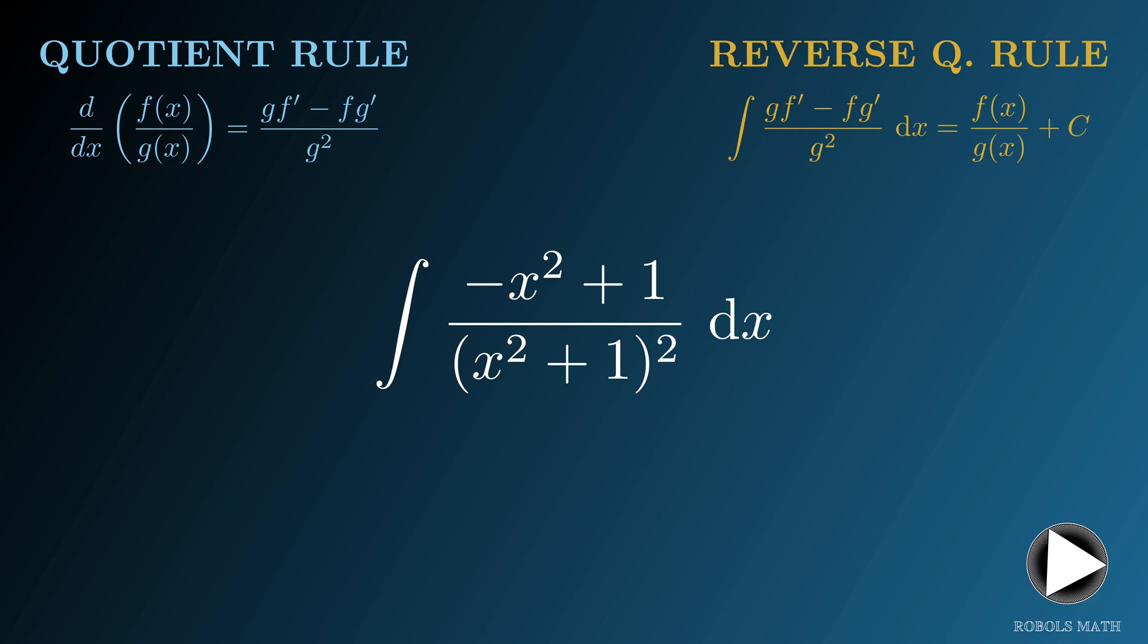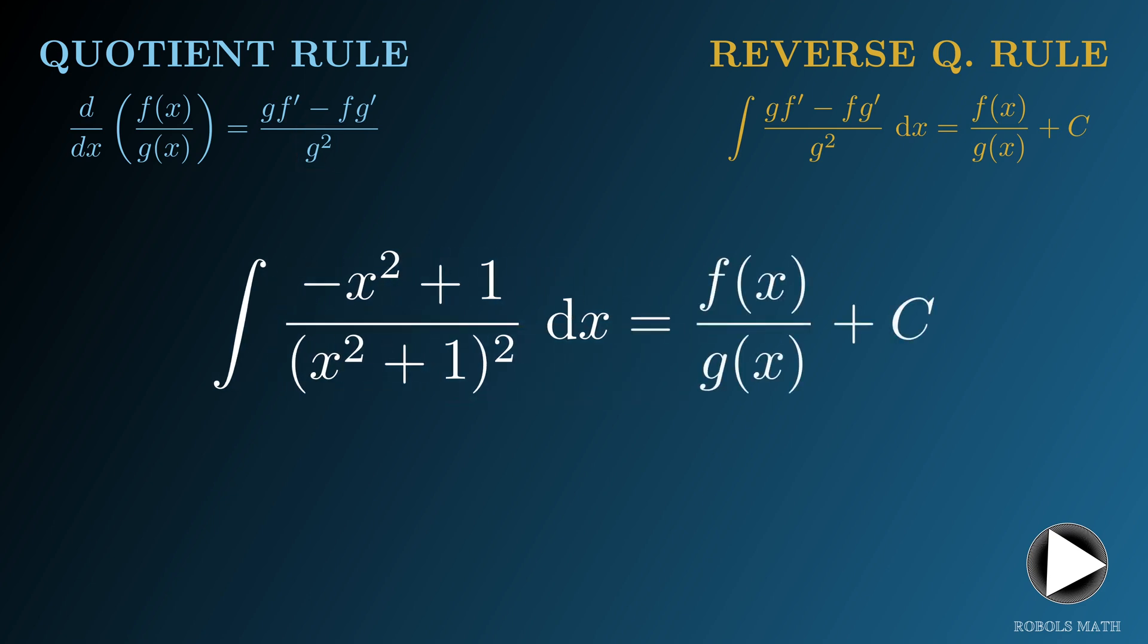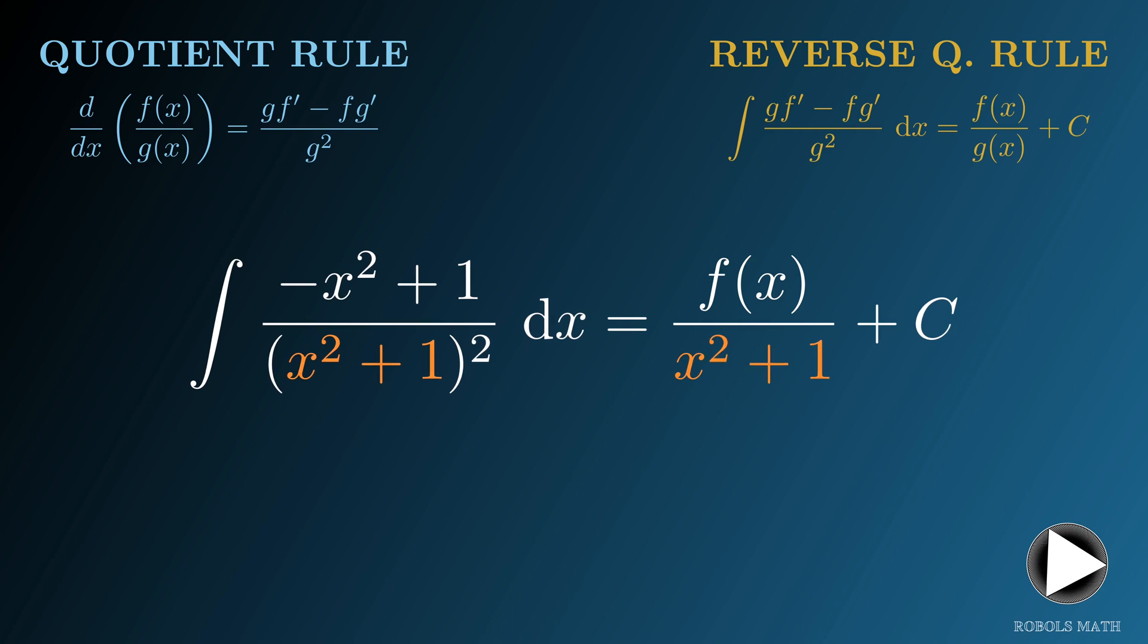The second reason follows closely from the first one. The denominator of the integrand is a square of another function. If we go back to the quotient rule for derivatives, we should note that the denominator is the square of g of x. Following this train of thought, let us assume that the required antiderivative is in the form f of x over g of x. If we compare the integrand to the quotient rule formula, we could infer that g of x is x squared plus 1, since the denominator of the integrand is the square of x squared plus 1.